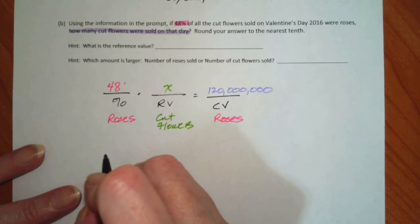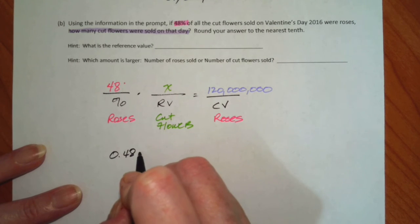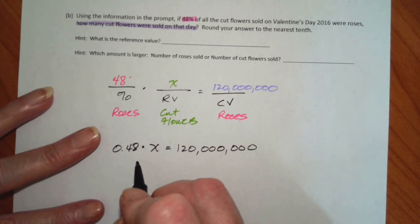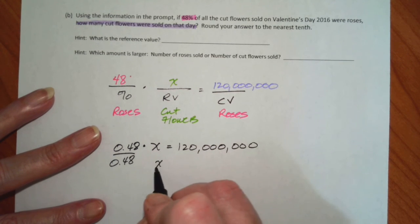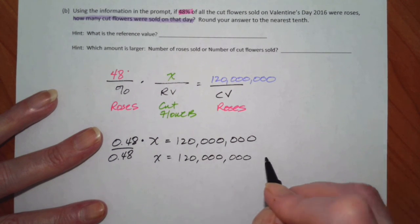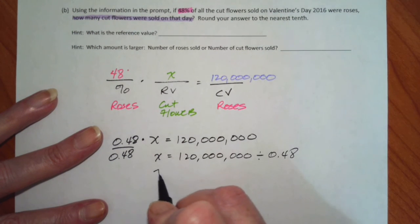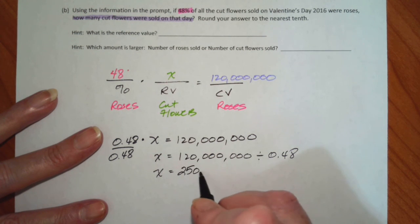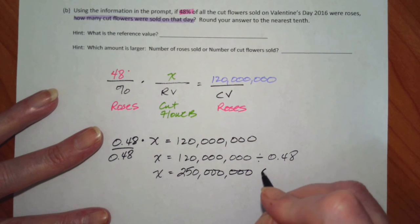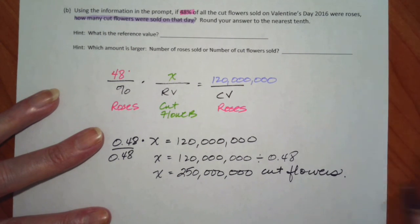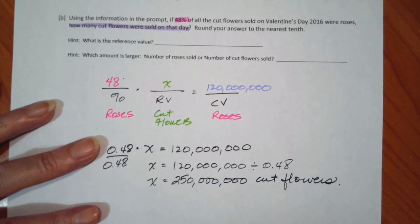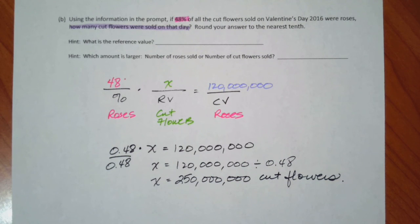Turn it into a decimal. 0.48 times x is... So I'm going to divide both sides. So this is 120,000,000 divided by 0.48, which tells me there were 250,000,000 cut flowers. All right. So that's that. We'll see you on the flip side.